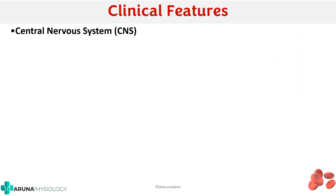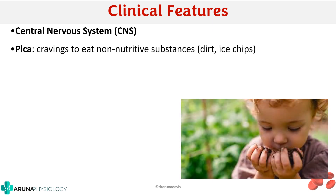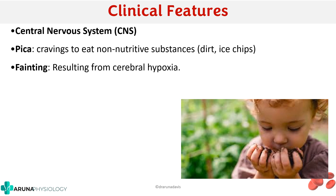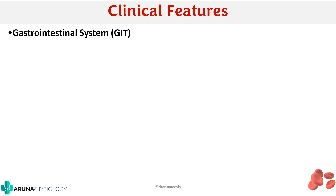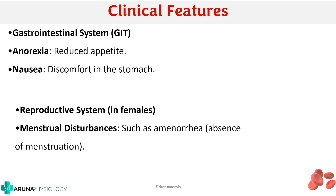In the central nervous system, an interesting feature is pica — a craving to eat non-nutritive substances like dirt or ice, especially seen in children. Fainting can occur due to cerebral hypoxia, along with lethargy, headache, and drowsiness all due to reduced oxygen supply to the brain. In the gastrointestinal system, the patient may experience anorexia or nausea. In the reproductive system, females can experience amenorrhea — absence of menstruation.